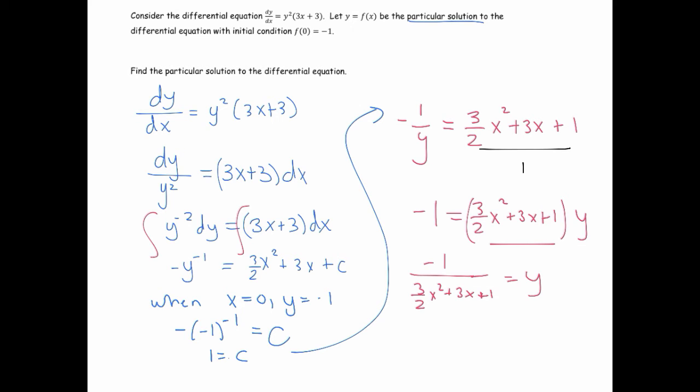So that's correct. If you want to clear that fraction there at the bottom, you can multiply everything by 2, the top and the bottom. So you could even write it as negative 2 over 3x squared plus 6x plus 2. Either one, so these are both acceptable answers. Alright, so there's just another example of solving a differential equation. I'll do one more on the next slide.